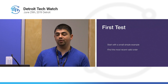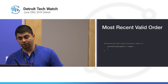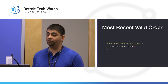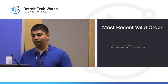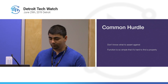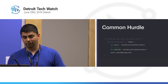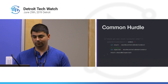Say we're sold on property-based testing and we want to try it out with a small, simple example — finding the most recent valid order. We set up our test, use an orders generator to produce a random list of orders, and get the result from our mostRecentValidOrder function. Then we hit a roadblock: the data is random and we don't know what to assert against. This is a common hurdle — the function is so simple that it's hard to find a property, and you end up trying to use the function you're testing to generate the assertion value, which is just not good.